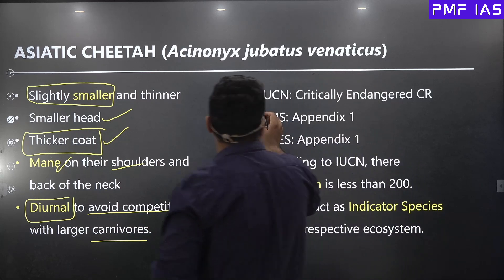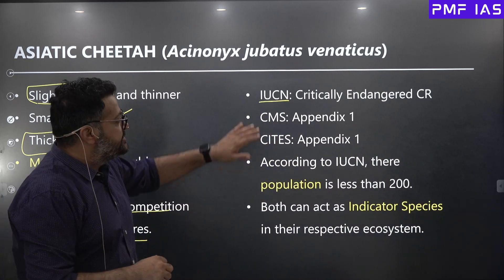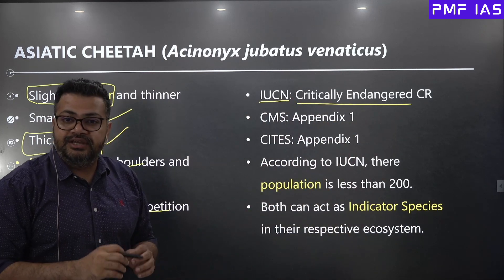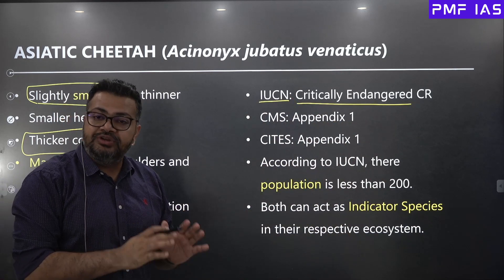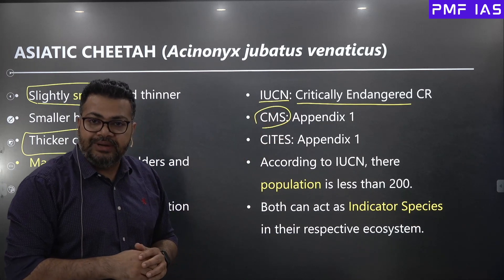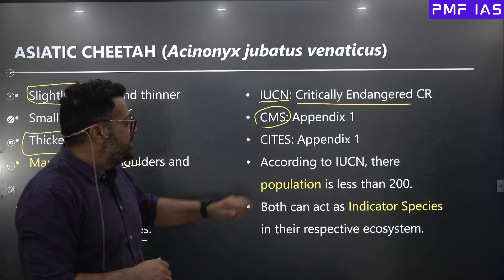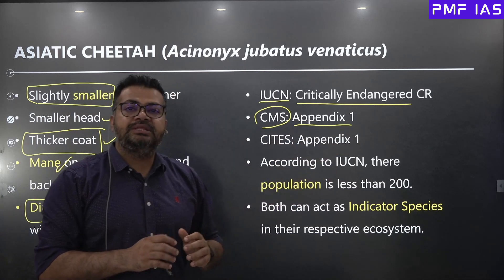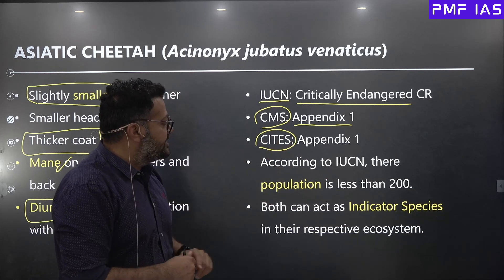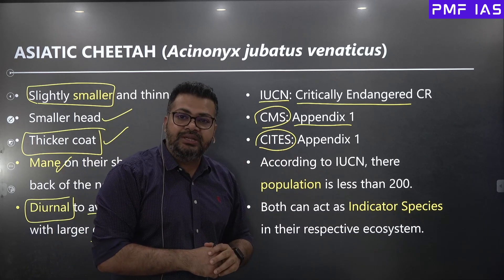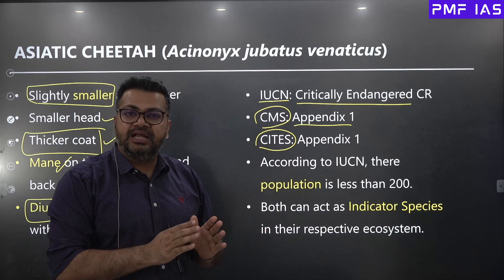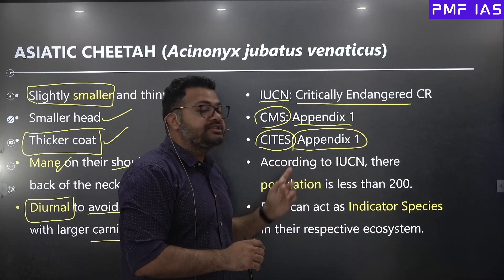When you talk about their status in the International Union for Conservation of Nature, Cheetahs are regarded as critically endangered. As per the Convention on Migratory Species, also known as the Bonn Convention, it has been listed under Appendix 1, which means these are species that are threatened. When it comes to CITES, it is also listed under Appendix 1, meaning these are species that are popular in international trade but are also threatened right now.